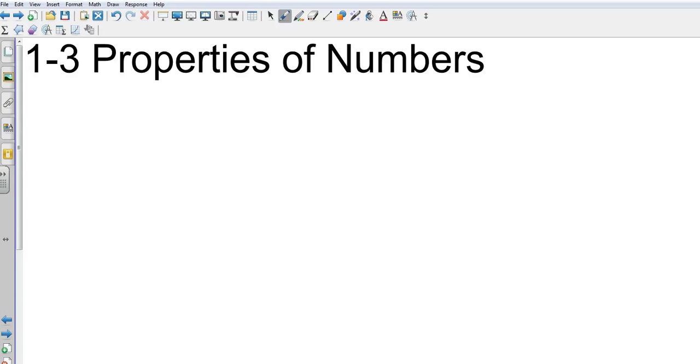Algebra 1, Chapter 1, Section 3, Properties of Numbers. We're going to go through four first here. There are more, but let's go through the first four of them.